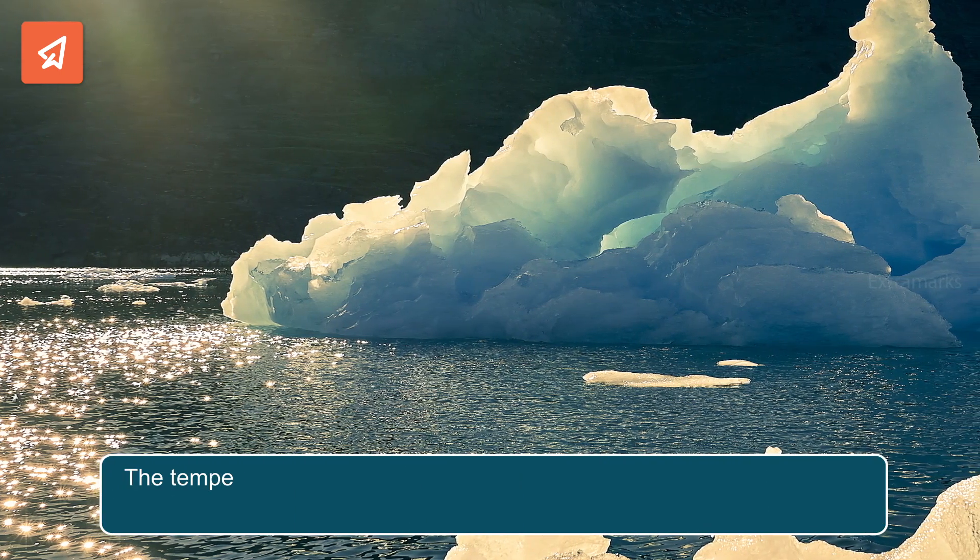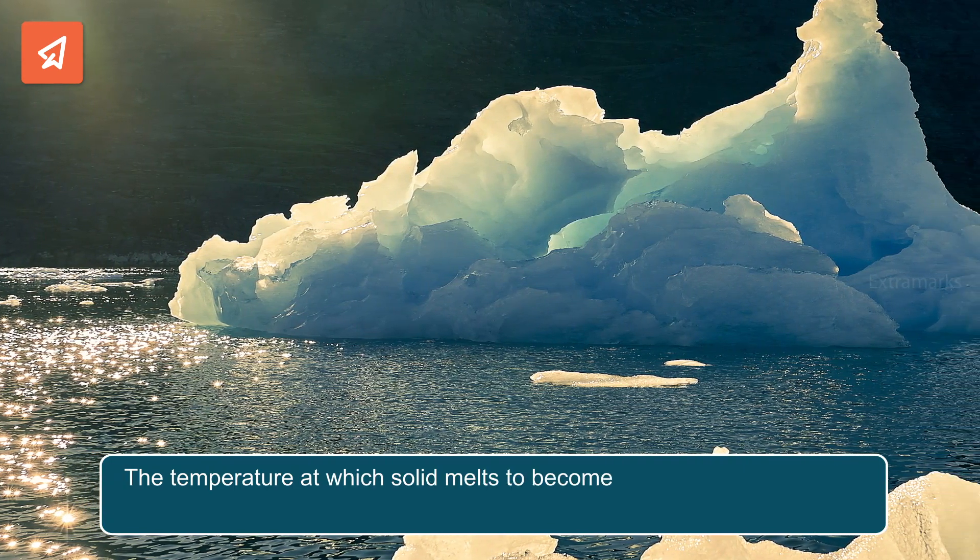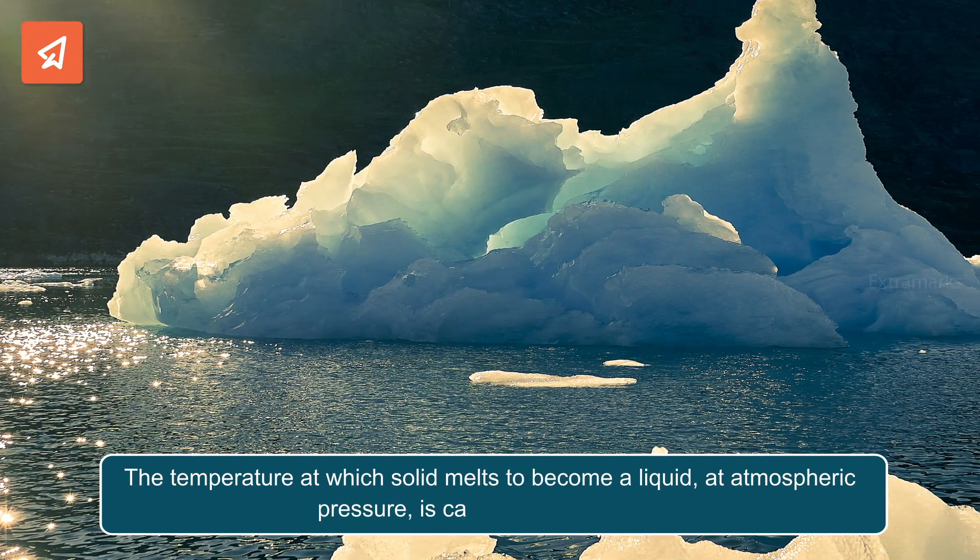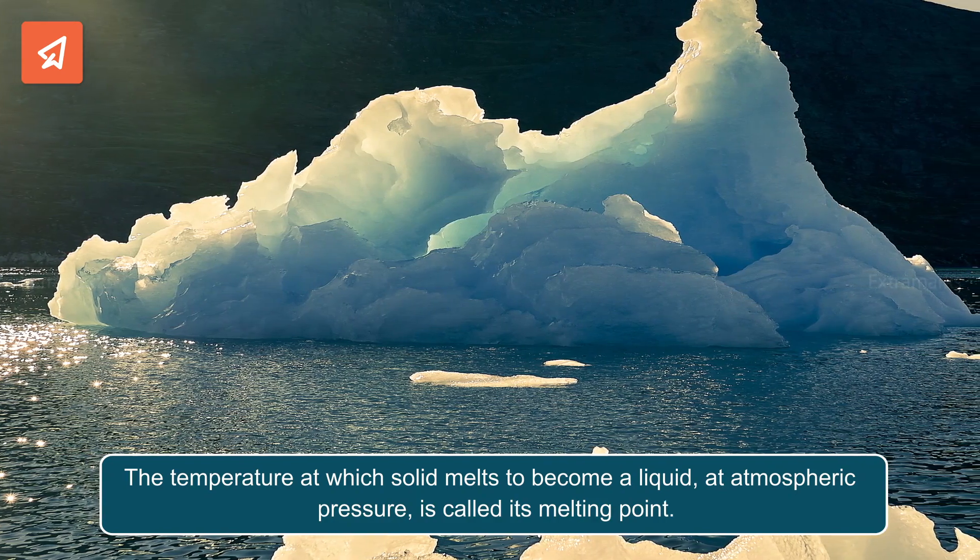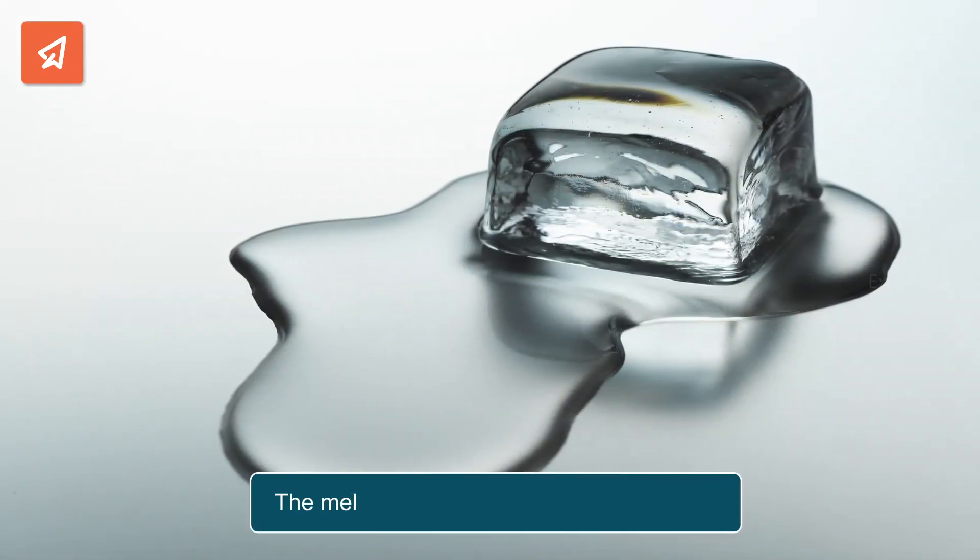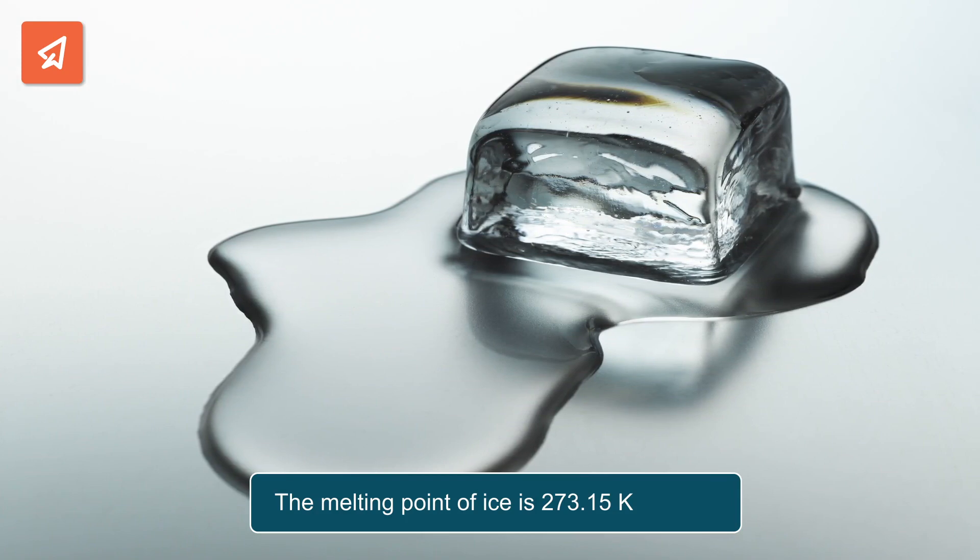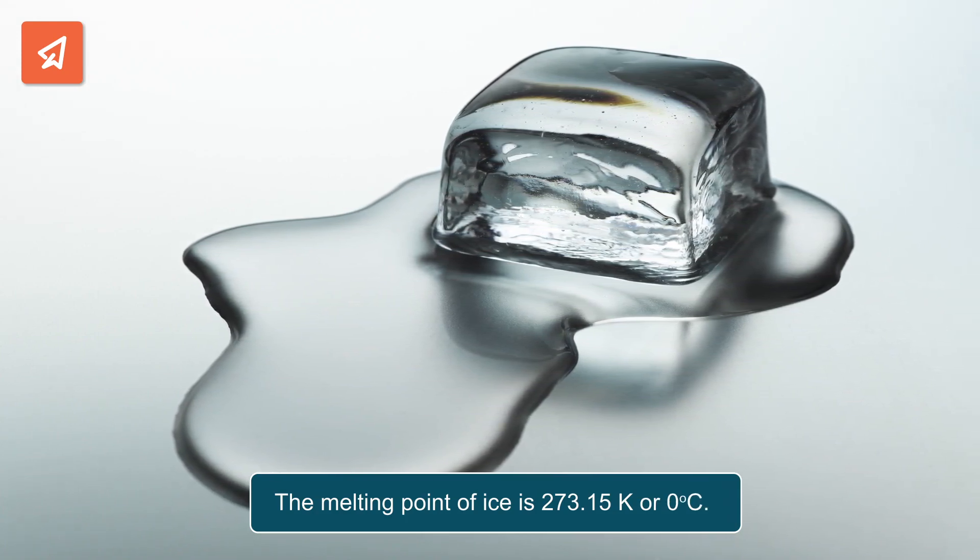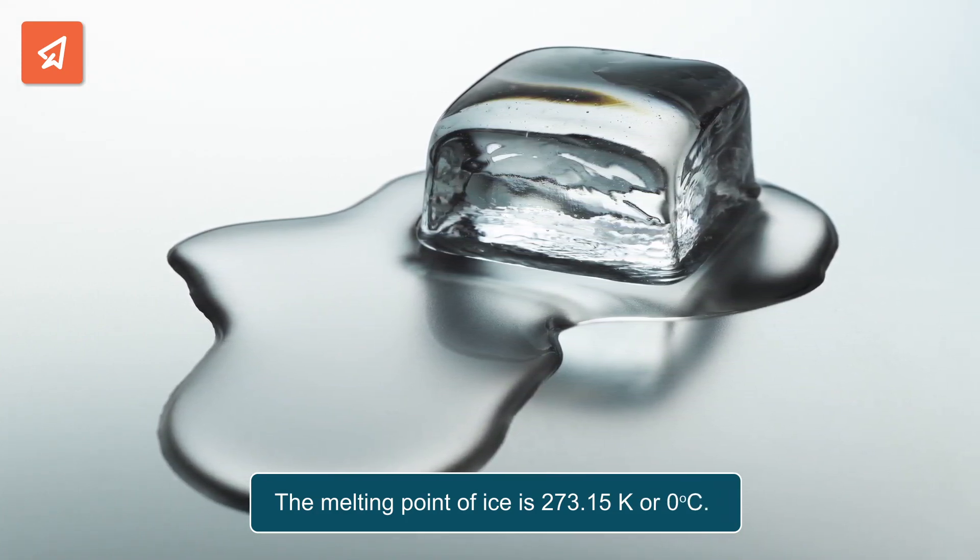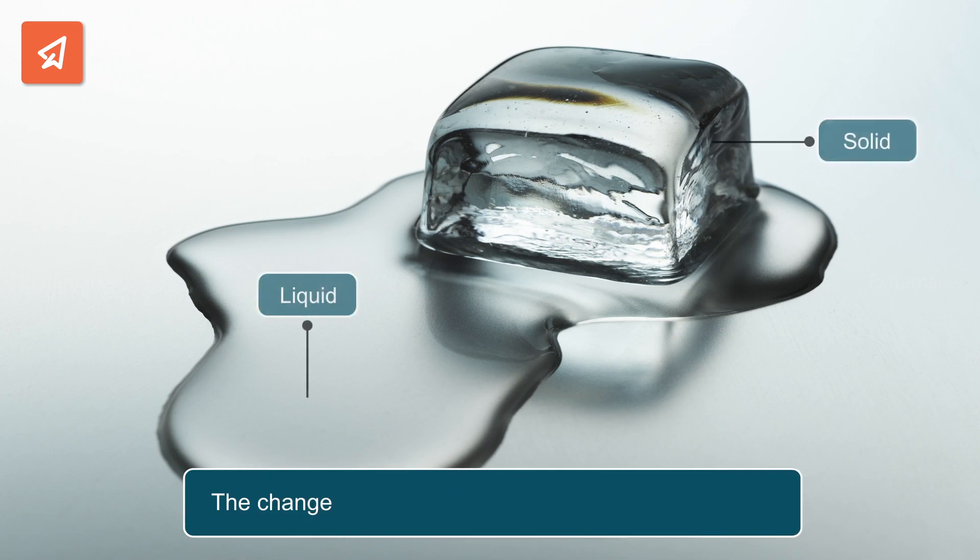The temperature at which solid melts to become a liquid at atmospheric pressure is called its melting point. The melting point of ice is 273.15 Kelvin or 0 degree Celsius. The change from solid to liquid is also known as fusion.